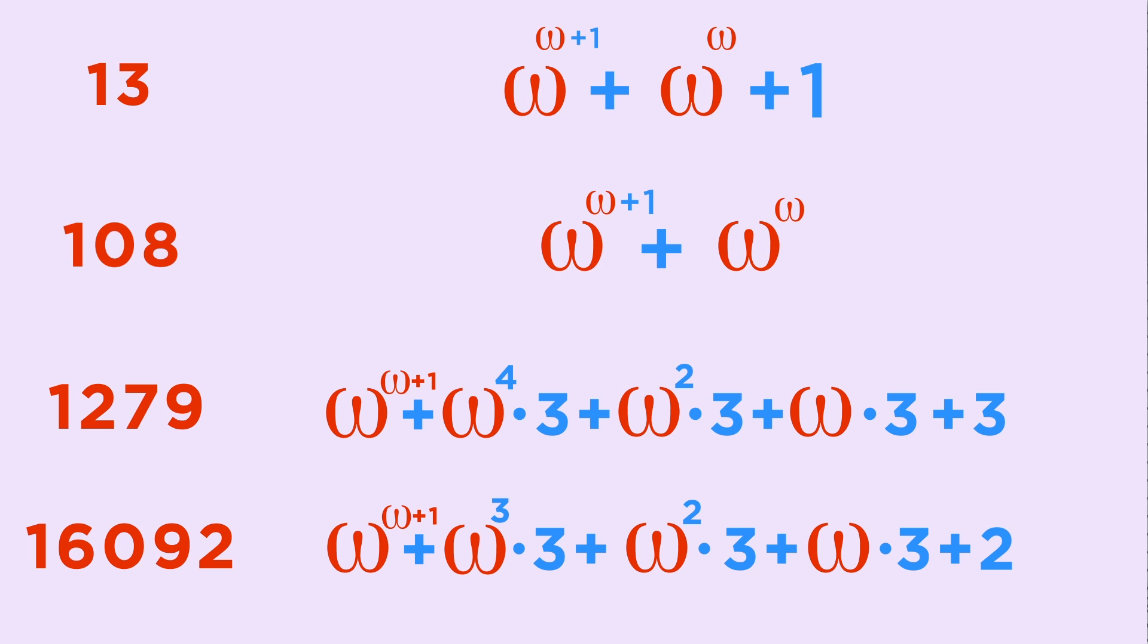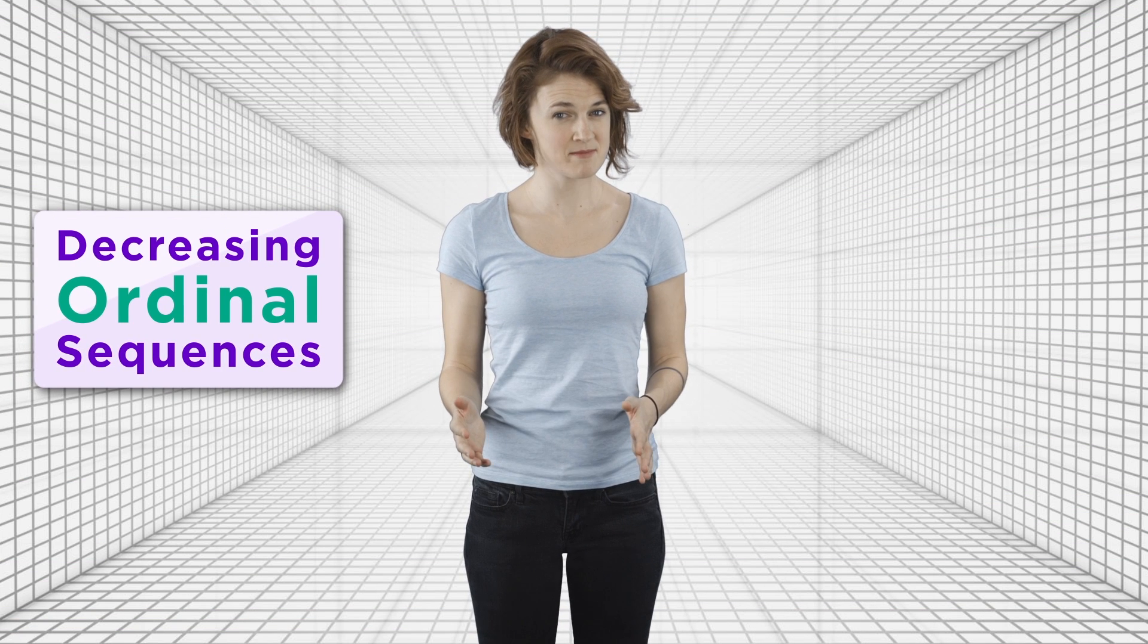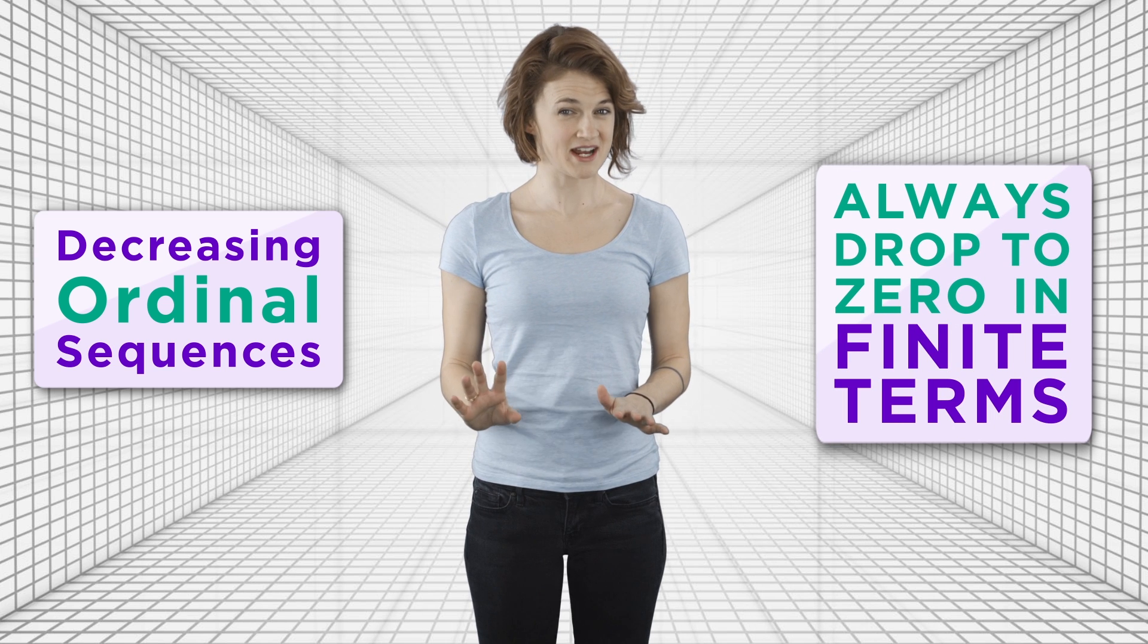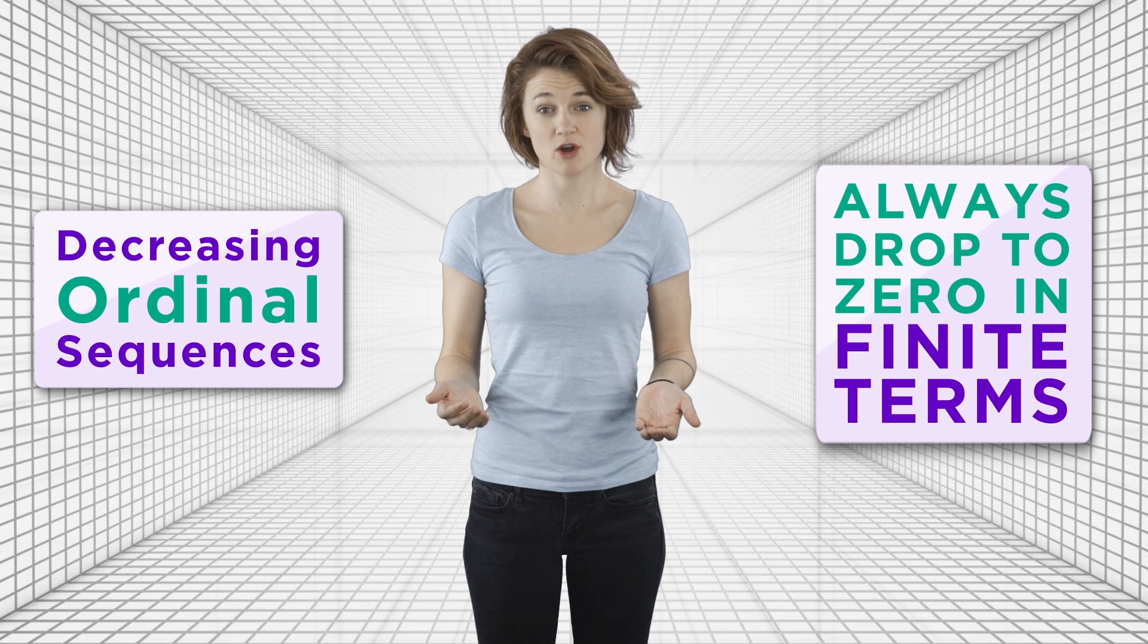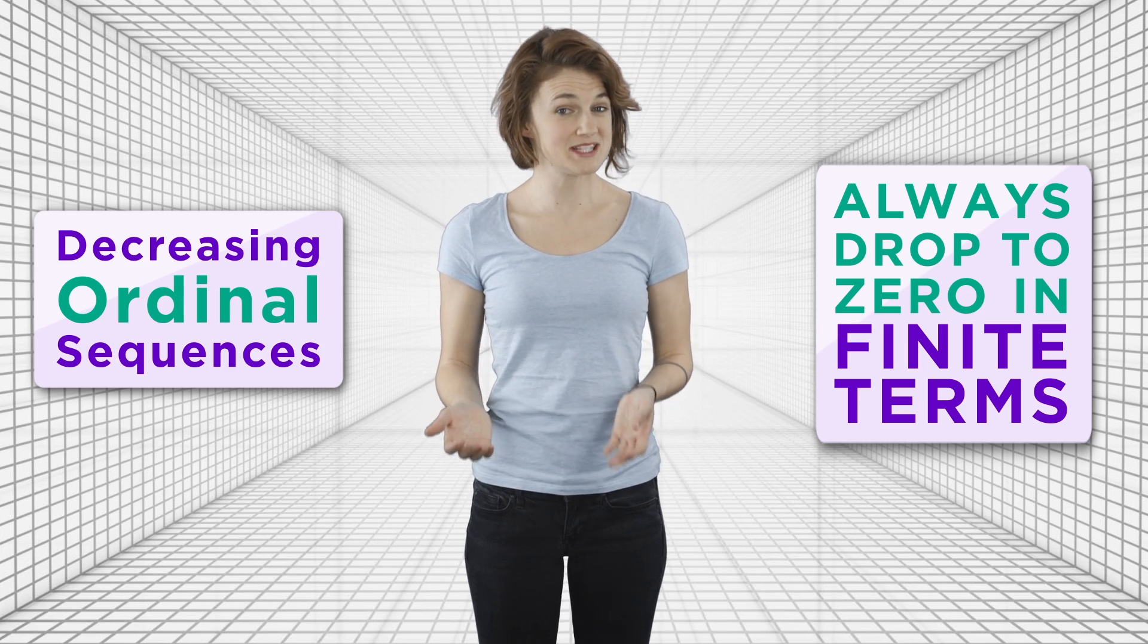What do you notice about this sequence? It's decreasing. It's pretty obvious that the second term is smaller than the first, but why is the third term smaller than the second? Well, omega to the fourth is way smaller than omega to the omega, so even three times omega to the fourth is still way smaller. And then the sequence just keeps decreasing. Remember the big fact about sequences of decreasing ordinals from last time? They always drop to zero in a finite number of terms. So, eventually, our ordinal sequence will be zero.